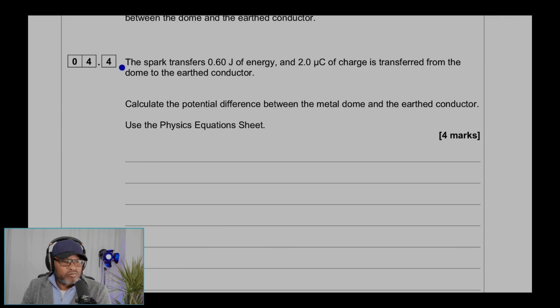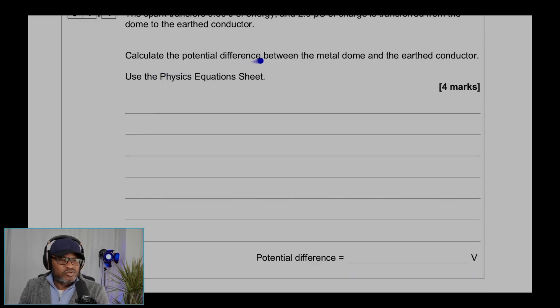The spark transfers 0.6 joule of energy, and 2 micro coulomb of charge is transferred from the dome to the earthed conductor. Calculate the potential difference between the metal dome and the earthed conductor. Use the physics equations sheet. This is four marks.